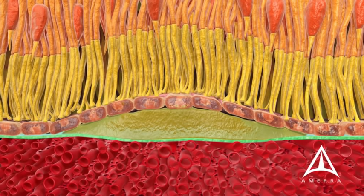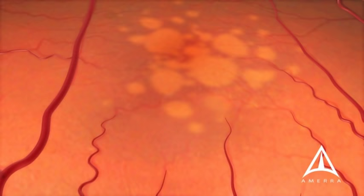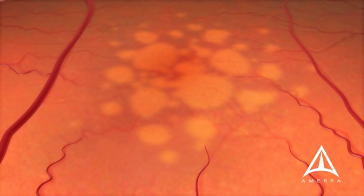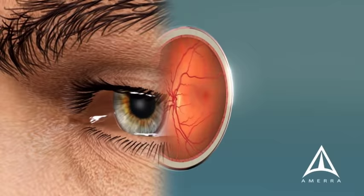Over time, dry macular degeneration can lead to scarring or thinning of the retina above. Dry macular degeneration may cause gradual central vision loss over time. Every patient has a different course, and some patients preserve vision for a very long time.